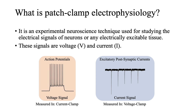So what is patch clamp? Patch clamp is an experimental neuroscience research technique used for studying the electrical signals of neurons or any electrically excitable tissue. The most frequently studied signals are voltage, the electrical potential of a cell or membrane, or current which is generated by ions flowing across the membrane through ion channels. These are acquired through the current clamp and voltage clamp methods. Additionally, many inferences can be made about the properties of a neuron using these readouts.